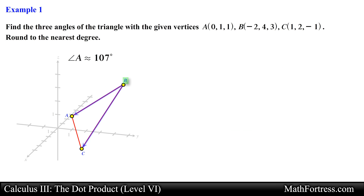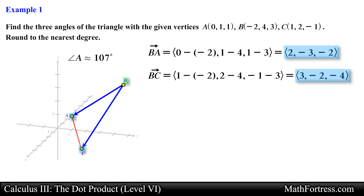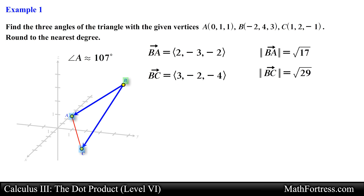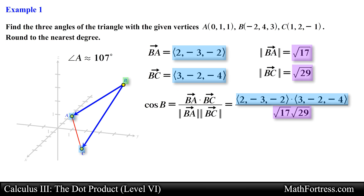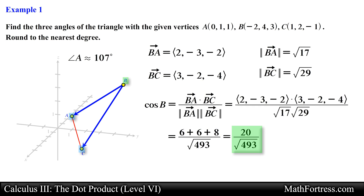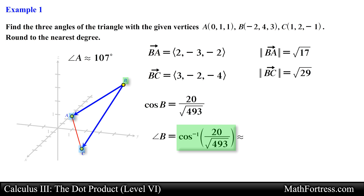Now we need to repeat the process for angle B. In this case we find the component form of vector BA, which is the negative of vector AB, and vector BC. Simplifying the expressions we obtain the components of vector BA and vector BC respectively. Next let's compute the magnitude of each vector. After that we substitute these values into the geometric definition of the dot product and compute the dot product and multiply the magnitudes together. Simplifying we obtain the following value.